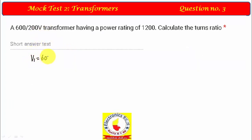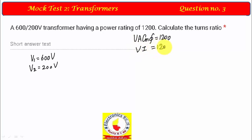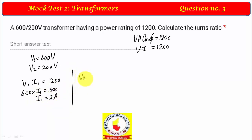Question 3: A 600V/200V transformer with power rating VA × cos φ = 1200, cos φ taken as 1 gives 1200 VA. Primary current I1: V1 × I1 = 1200, so 600 × I1 = 1200, giving I1 = 2 amperes. Secondary current I2: V2 × I2 = 1200, so 200 × I2 = 1200, giving I2 = 6 amperes.